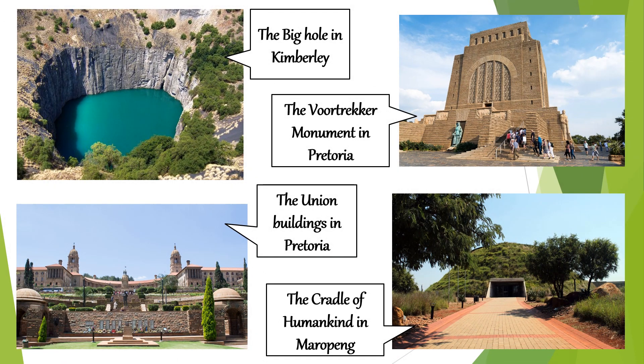Just looking at these pictures they look amazing — I just want to visit all of these places! Let's look on the left at the top — we can see the Big Hole in Kimberley. It looks dangerous; I wouldn't go and stand on that edge! And then at the bottom we can see the Union Buildings in Pretoria. Look at that structure — you won't forget that if you see it.